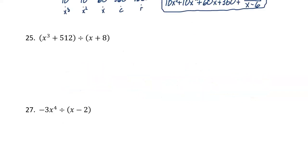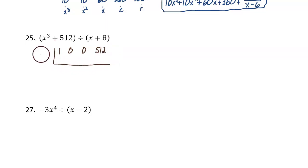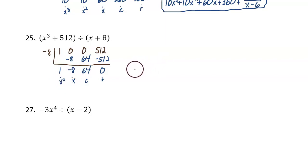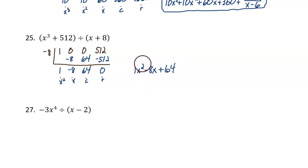Next, number 25. Another division problem using synthetic division. We have 1 from the x cubed, 0x squared, 0x, and then 512. We're going to divide by negative 8. Bring down the 1: negative 8, negative 8, 64, 64, negative 512, and 0. The remainder is 0. The answer is x squared minus 8x plus 64.